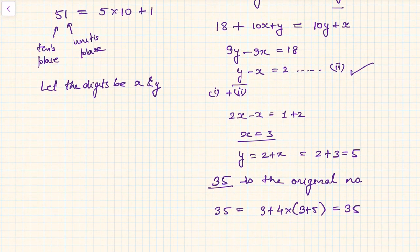And the second condition was, if 18 is added to the number, the digits reverse. Yes it does, 35 plus 18 equals 53. It is reversed. So hence our solution, that the original number is 35, is correct.